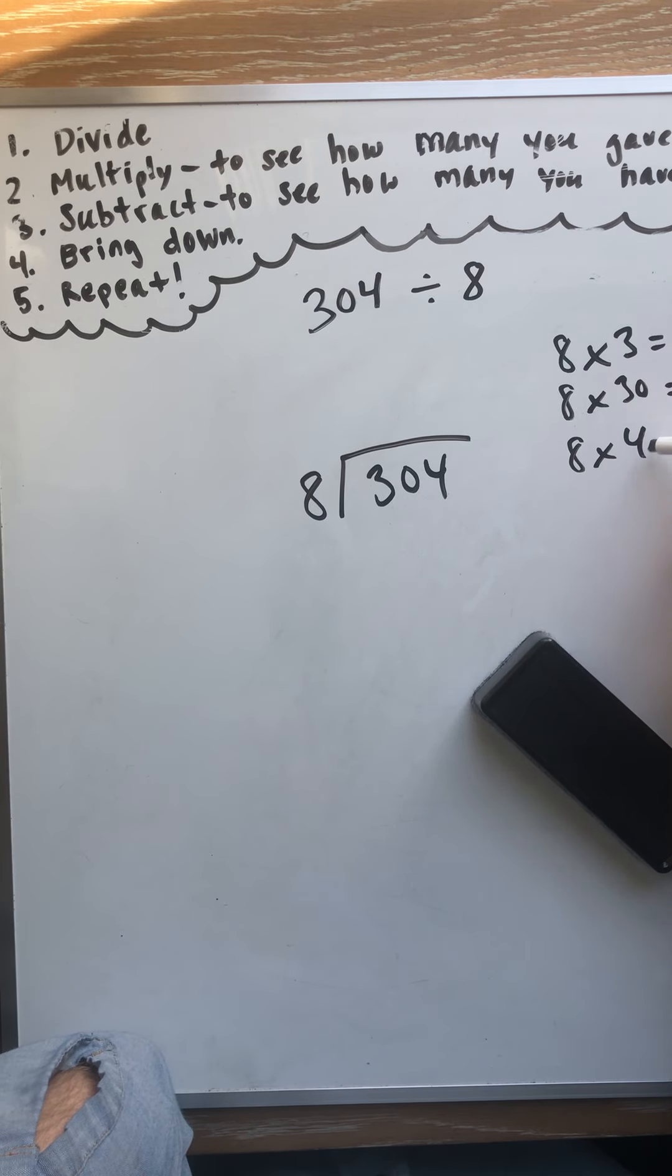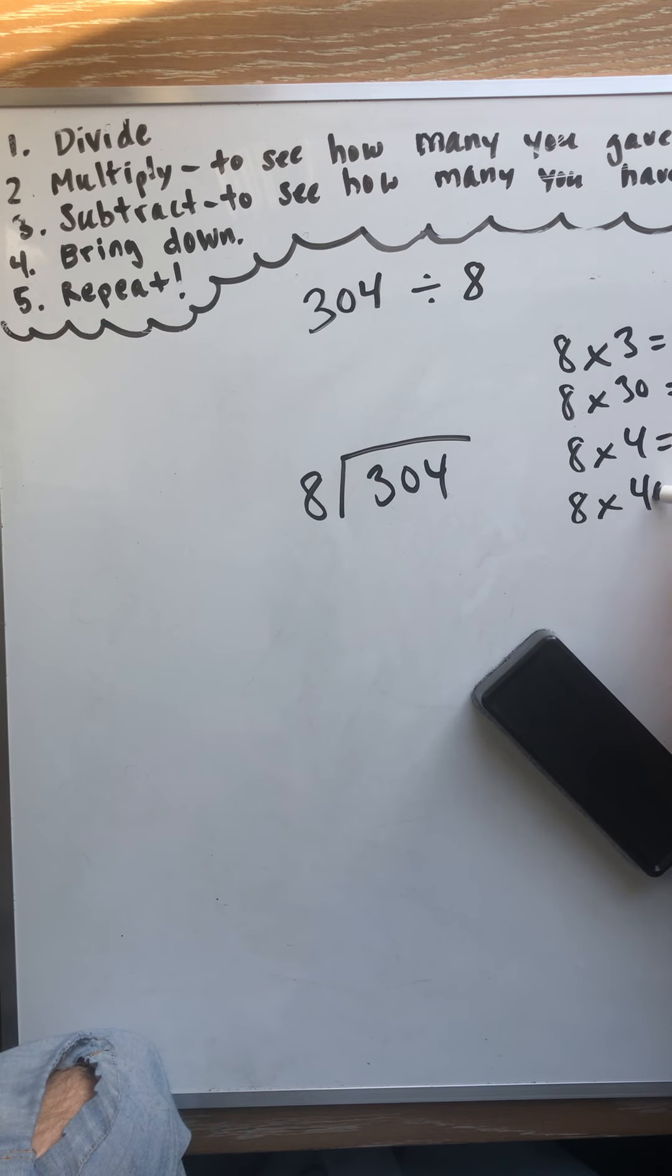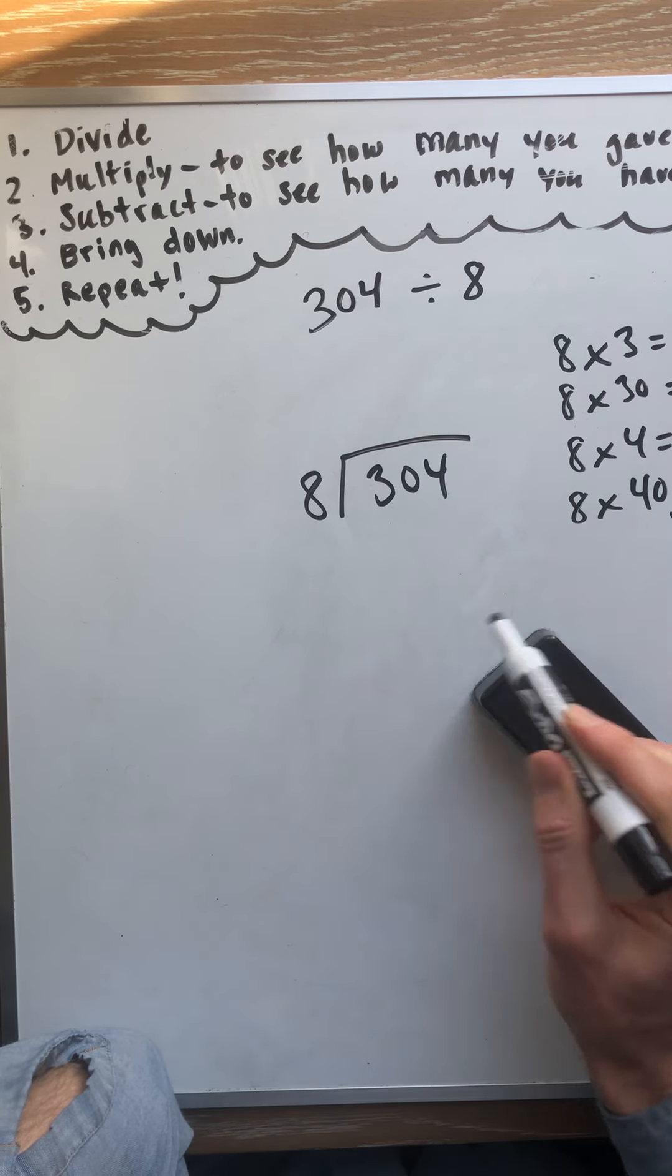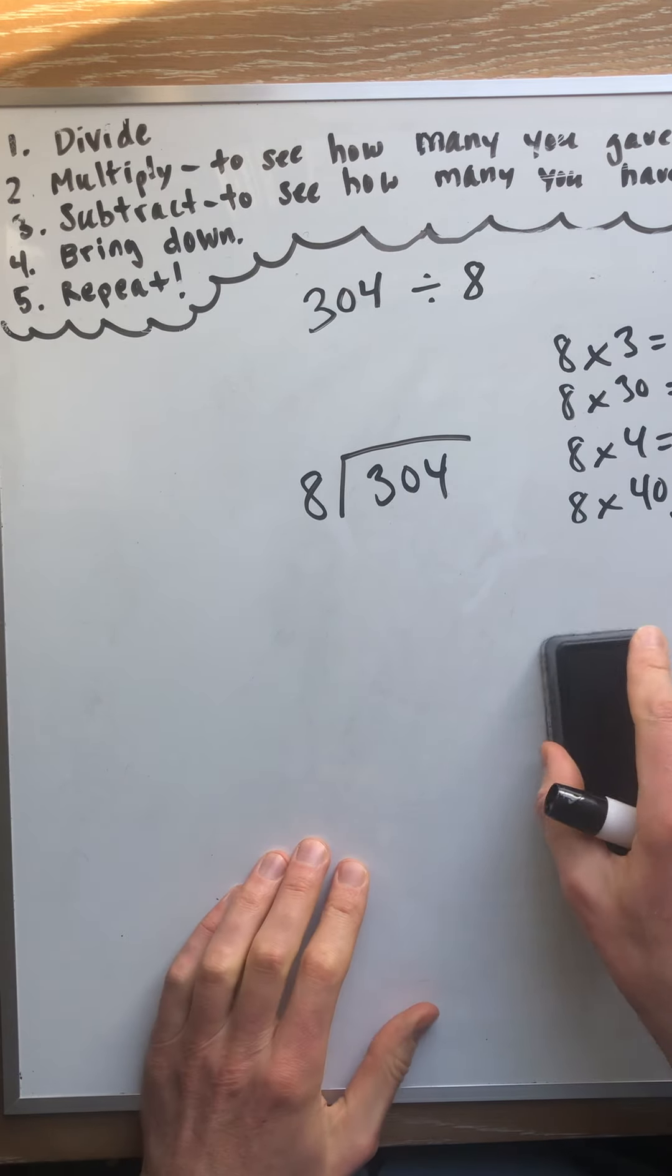Let's see, 8 times 4 equals 32. Which means 8 times 40 equals 320 because 0 goes over there. And it's 304. So it's going to be somewhere between 30 and 40. Let's find out.